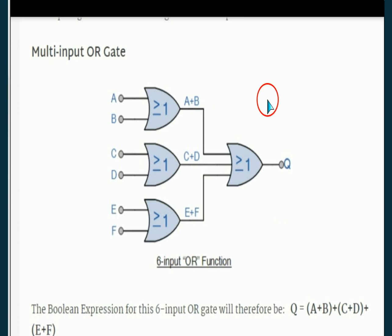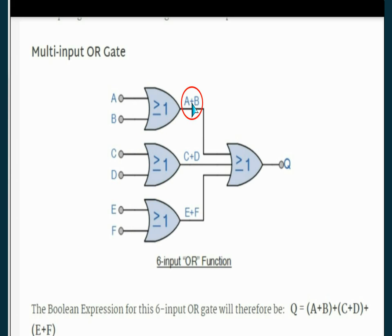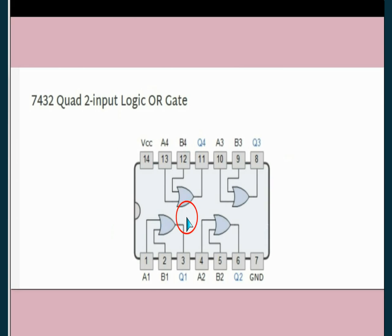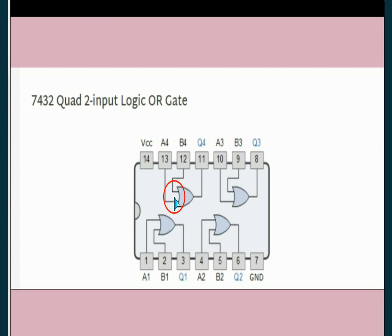Here there are three OR gates with six inputs: A OR B, C OR G, and E OR F. In an IC package, there are four OR gates connected between different inputs.